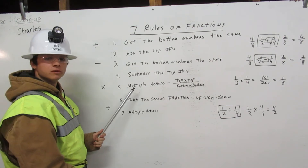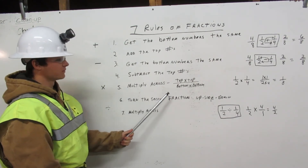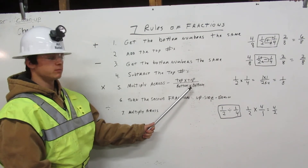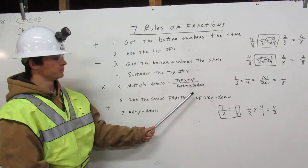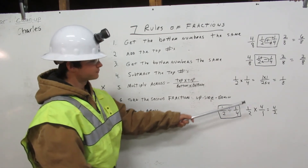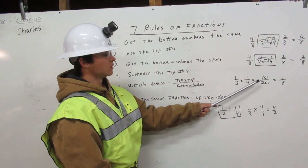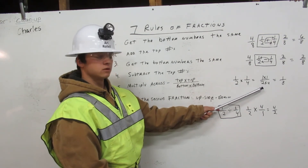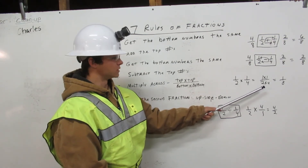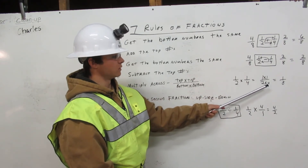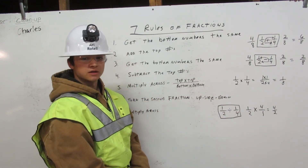Next, we multiply fractions. There's only one rule: multiply across — top number times the top number over the bottom number times the bottom number. Here's an example: one half times one quarter equals one times one over two times four. One times one is one, and two times four is eight. One eighth. That is how you multiply all fractions.